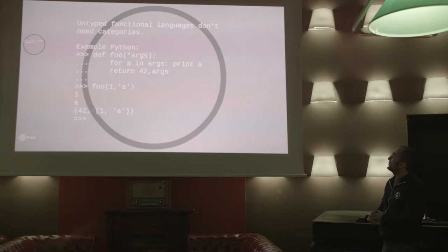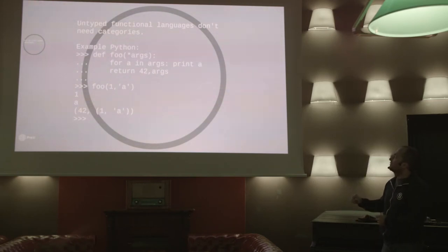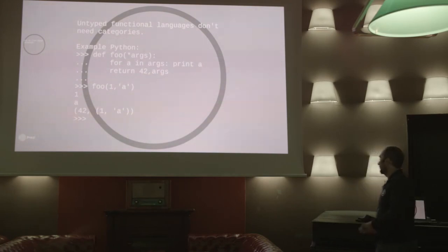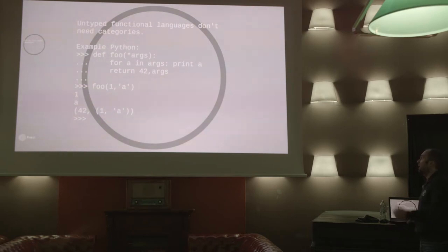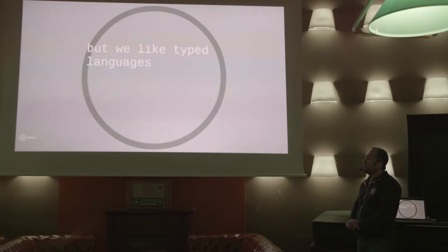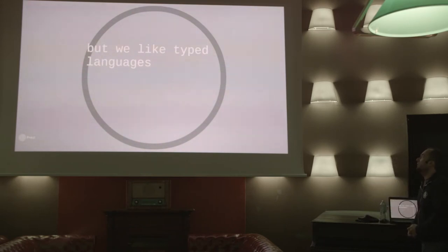In case of untyped languages like Python, the argument we pass to a function is a tuple, and what we get back from the function as a result is also a tuple. So whenever I have two functions, I can compose them — I don't need any other combiners. There are other languages like JavaScript where these things are also possible. Unfortunately, we like typed languages, because the type inferrer solves for us a lot of problems with errors related to incorrect data passed to functions.